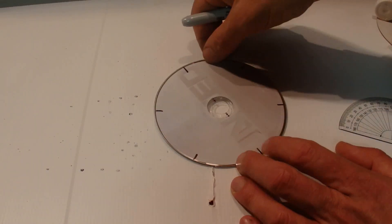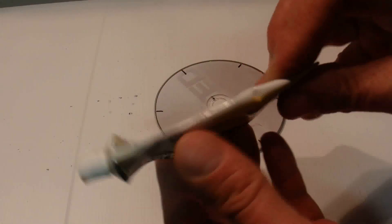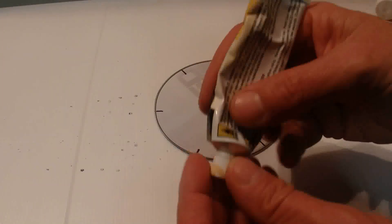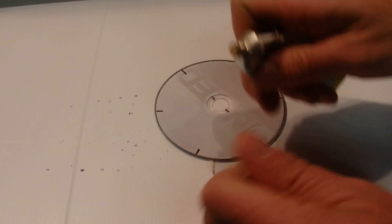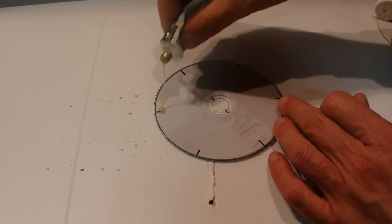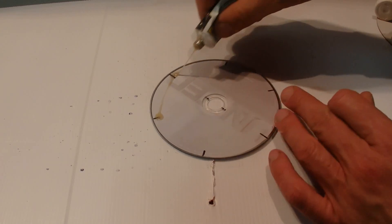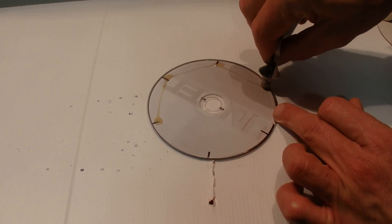Next I'm going to get this contact adhesive. I've used that a fair bit—it sticks wood and plastic and metal. I'll put a dab of that on each of those dots marks.